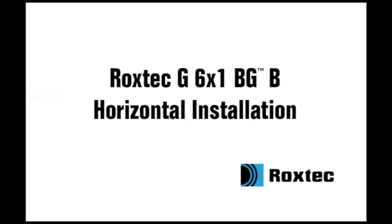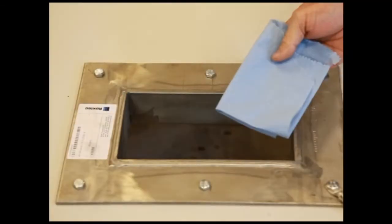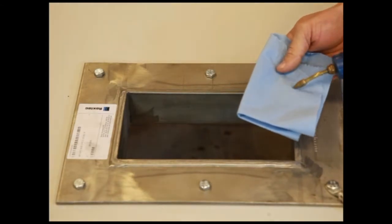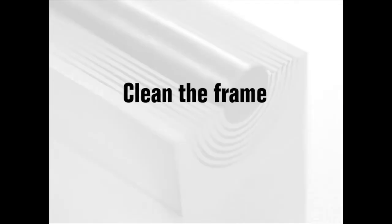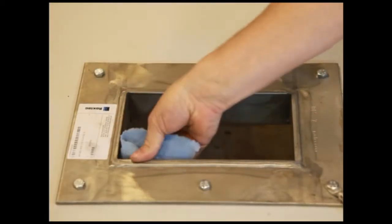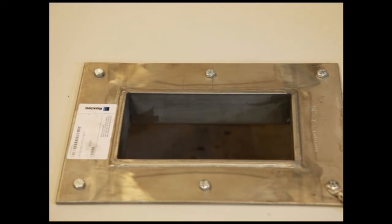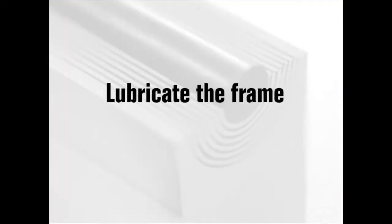Installation of Roxtec G 6x1 BGB. To install the Roxtec G 6x1 BGB, you need the frame, the compression unit, stay plates, RM BGB modules, and Roxtec lubricant.